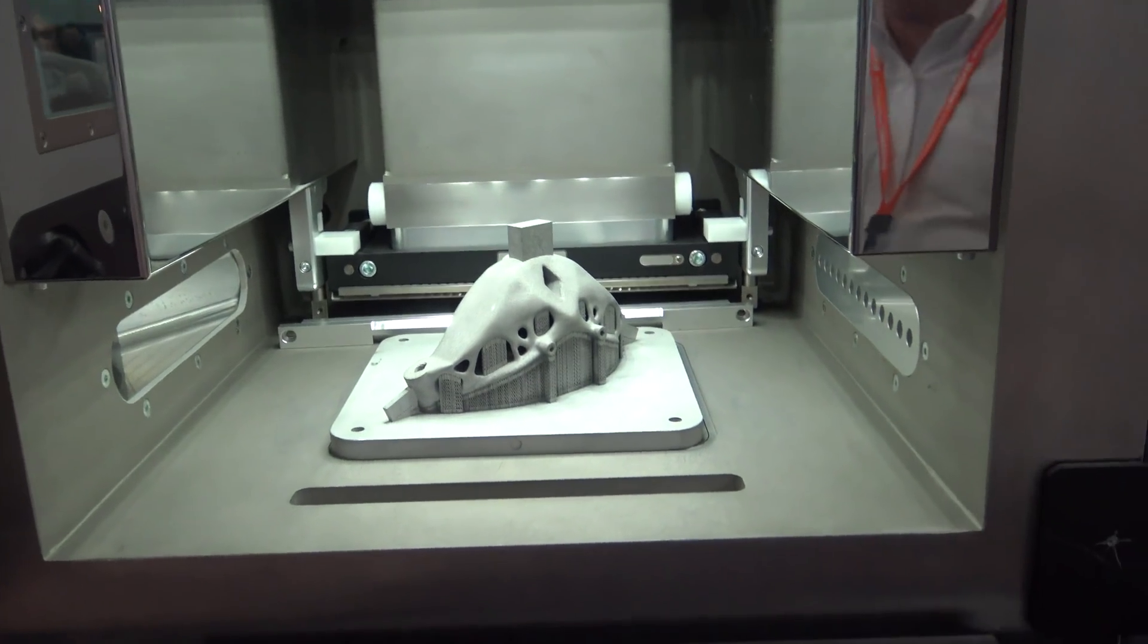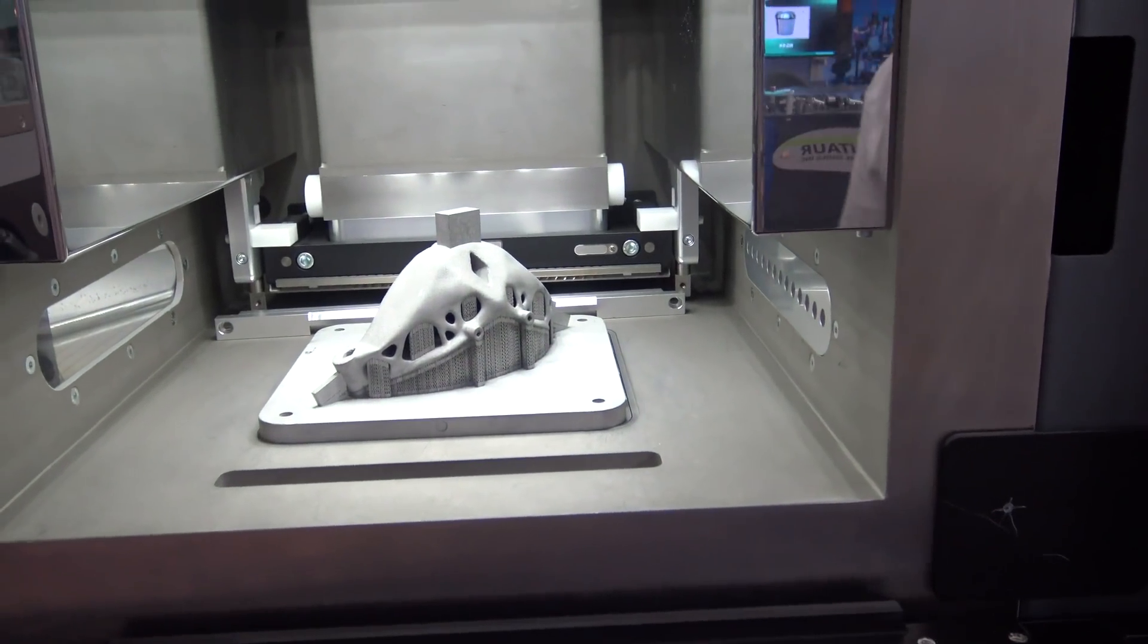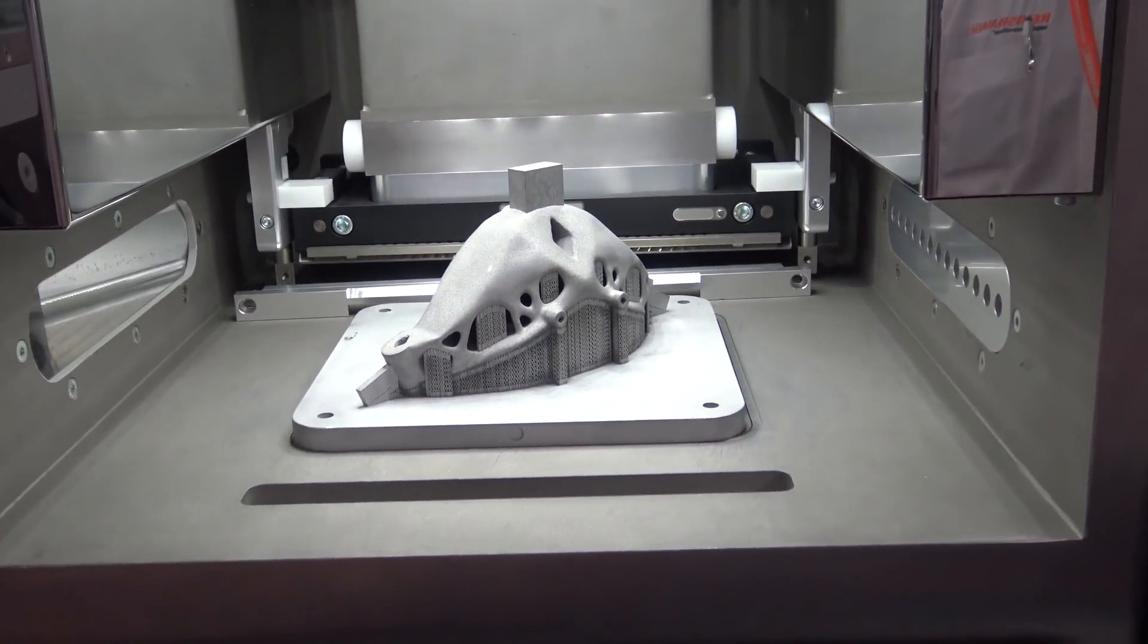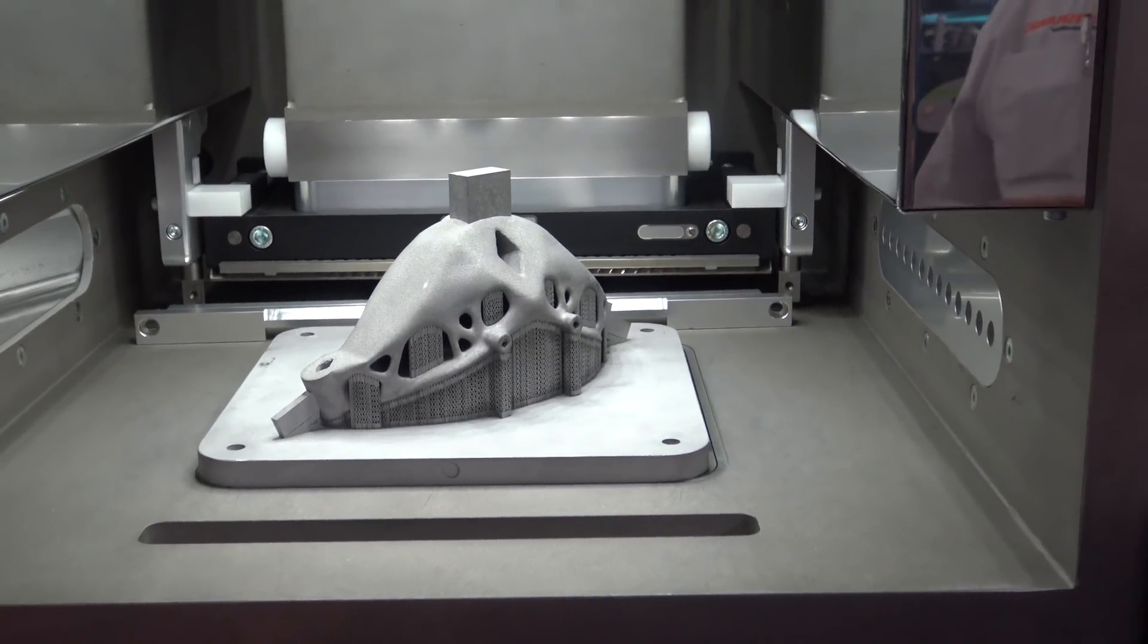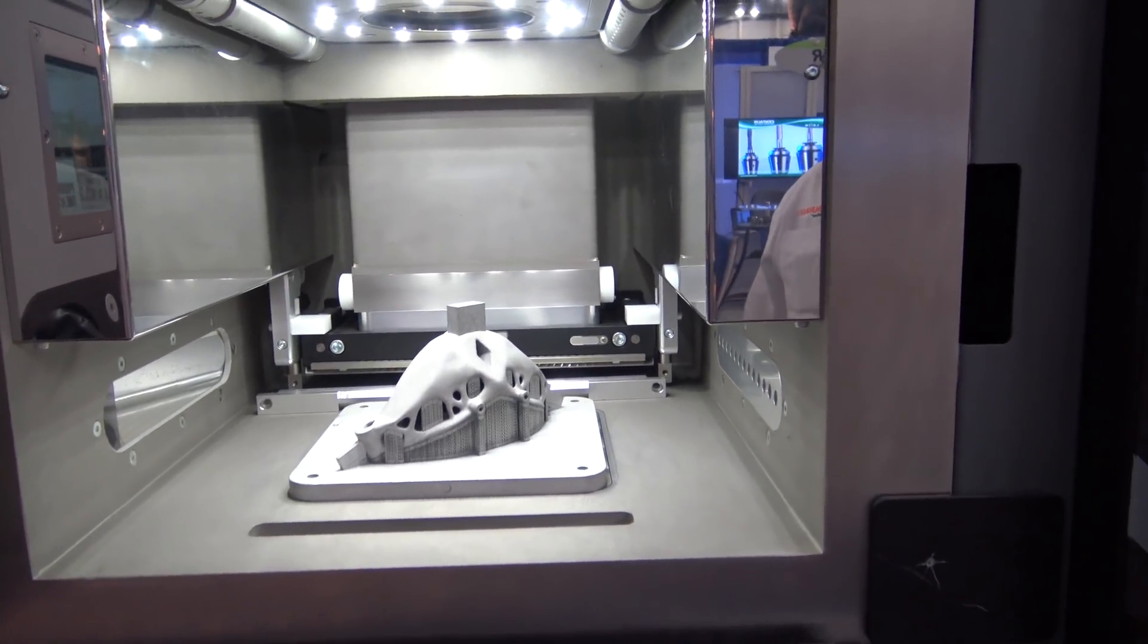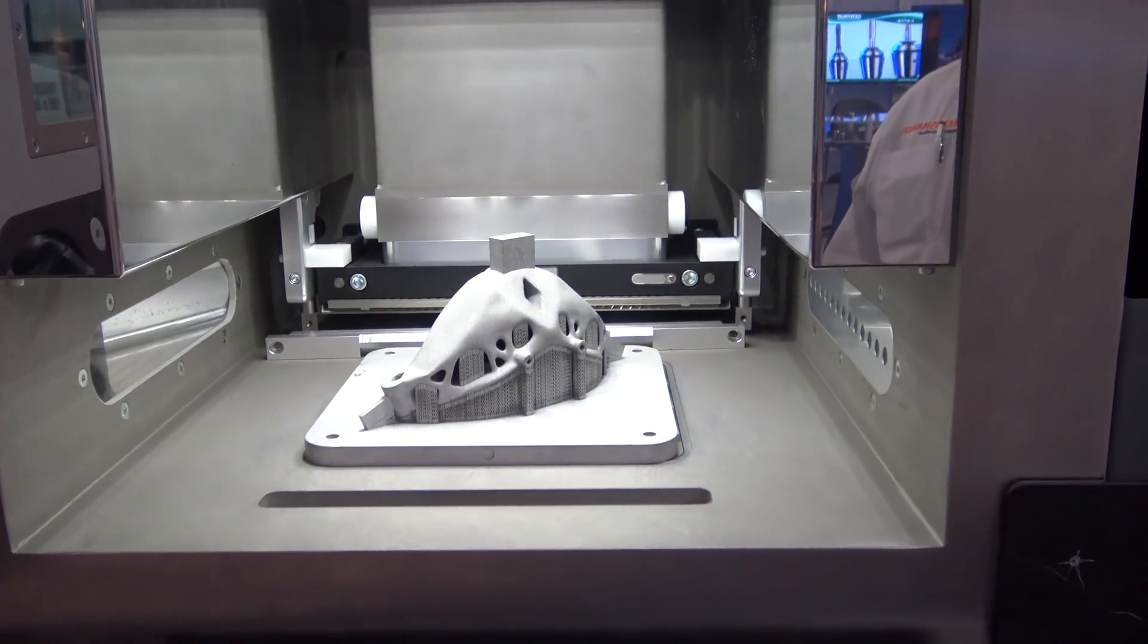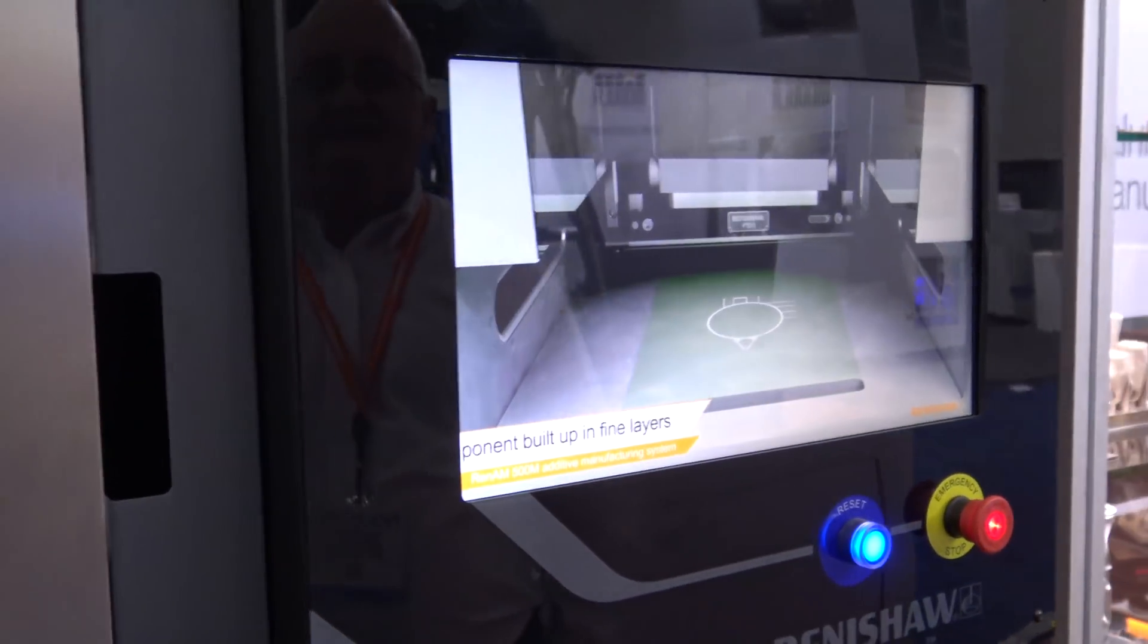After you print an object, do you have to de-stress it or heat treat anything? Yes, just like you'd heat treat any normal part if you need to. With titanium, though, yes, you do de-stress it with heat. What happens if you don't de-stress it? Potentially it could deform due to the unevenness of the stress.